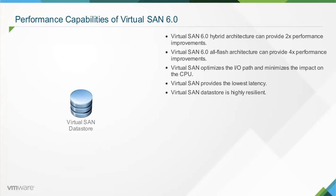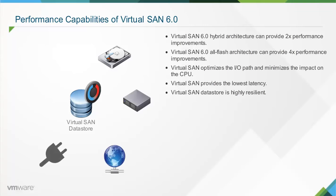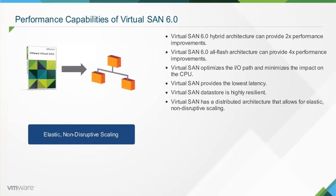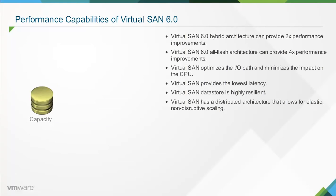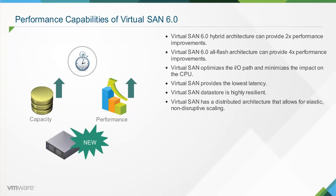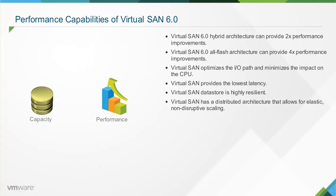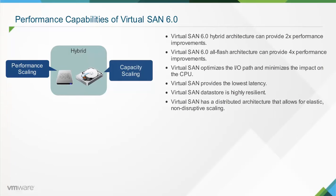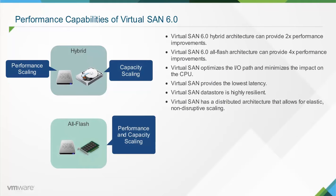The Virtual SAN data store is highly resilient, preventing data loss in the event of a disk, host, network, power, or rack failure. Virtual SAN has a distributed architecture that allows for elastic, non-disruptive scaling. Both capacity and performance can be scaled simultaneously by adding a new host to the cluster — that is, scale out. Alternatively, capacity and performance can be scaled independently by adding new drives to existing hosts — scale up. For example, you can add flash-based devices for performance or HDD for capacity in hybrid architectures, and add flash-based devices for both performance and capacity in all-flash architectures.